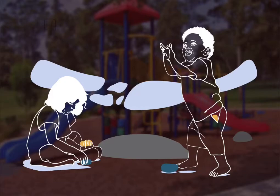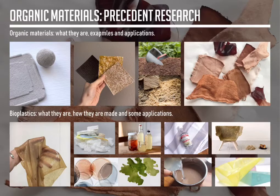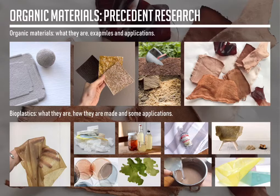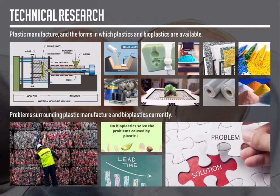I started by collecting information about organic as well as biomaterials. What stood out to me was that there is actually a difference between bio and organic, which I didn't realize before doing this research. The distinction is that biomaterials consist of living cells from microorganisms like algae and fungi, while organic materials simply don't. I also researched problems surrounding plastics and bioplastics so that I could use this to inform my material experimentation.